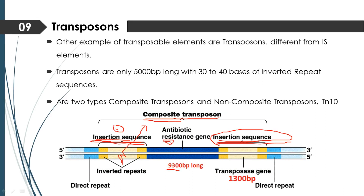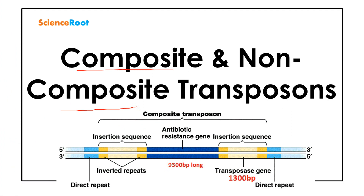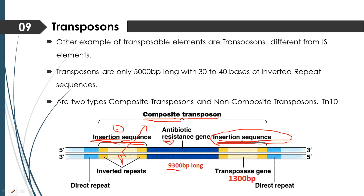Another type of transposon is the non-composite transposon. The difference between composite and non-composite transposons is that the non-composite transposon does not contain insertion sequences. It is just a region which contains the antibiotic resistant genes. It does not contain insertion sequences at all. This is the key difference between composite and non-composite transposons.